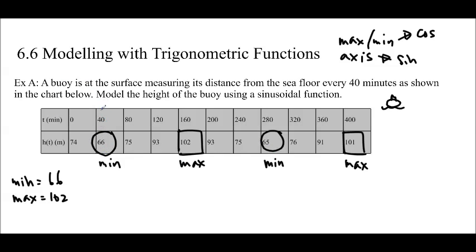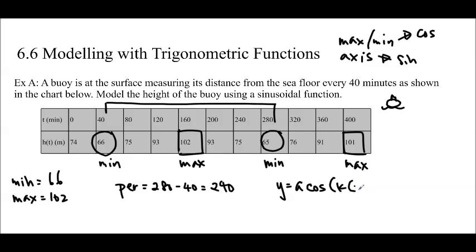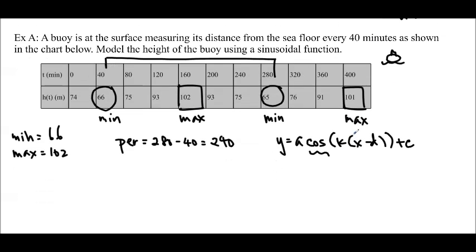And then we've got 102 and 101-ish, which seem to be our maximums, so I'll label those in there. So I'm just going to choose my min as 66 and my max as 102. I wanted to choose the ones that are, like when I subtract them it's going to be even, because then I can just divide by 2 and it'll be easy. So, and then I'm going to find the period, the period goes from the min to the min, or the max to the max. So I can see that my period is going to be 280 minus 40, so you're doing the x values, so it's 240.